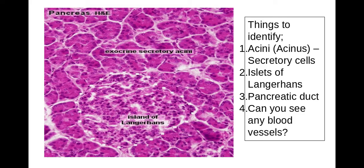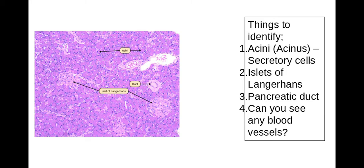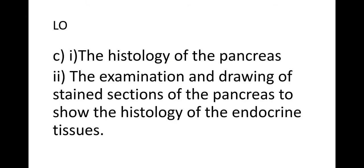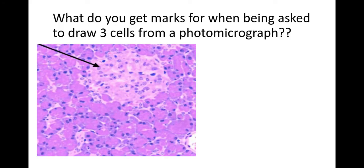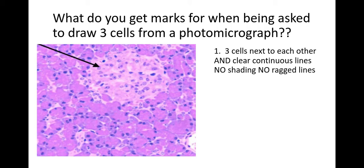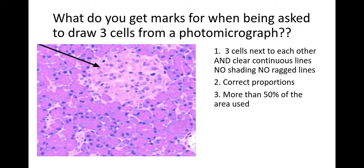If you need to recap, just go back on the video and review those different features. Now, just to make you aware — and here is an image with all three on — let's also remind yourself how to draw an image from the microscope. This comes up every single year in the exam. You need to be able to get full marks when asked to draw cells from a photomicrograph. For example, if asked to draw three cells, you must draw exactly three cells with clear continuous lines, no shading, and no ragged edges. You must have correct proportions so the examiner can identify which cells you have drawn, and your drawing must use more than 50% of the area provided so your cells are large and fill the space.